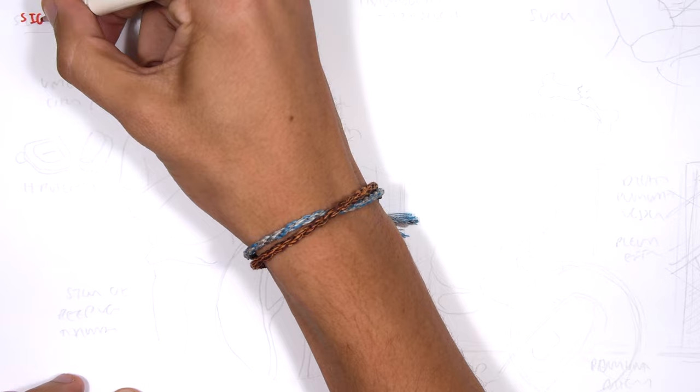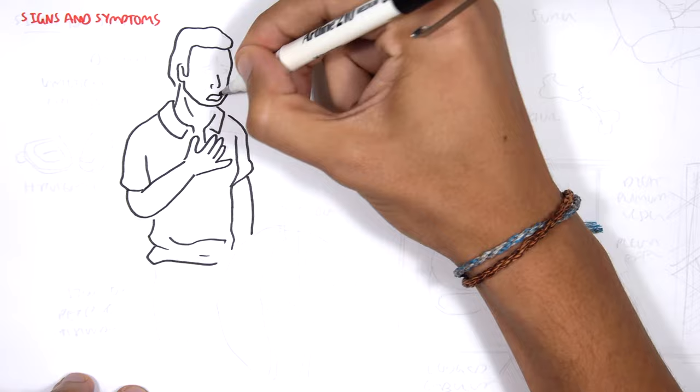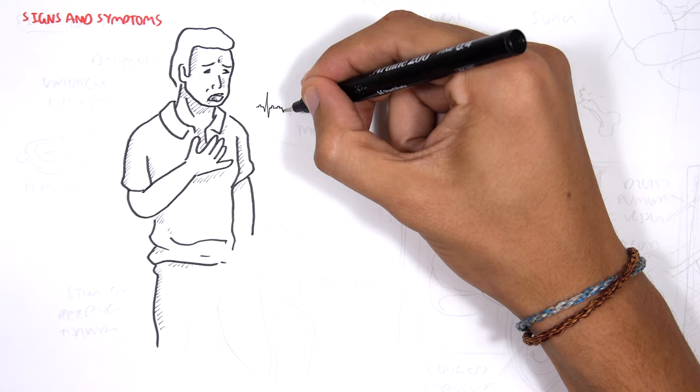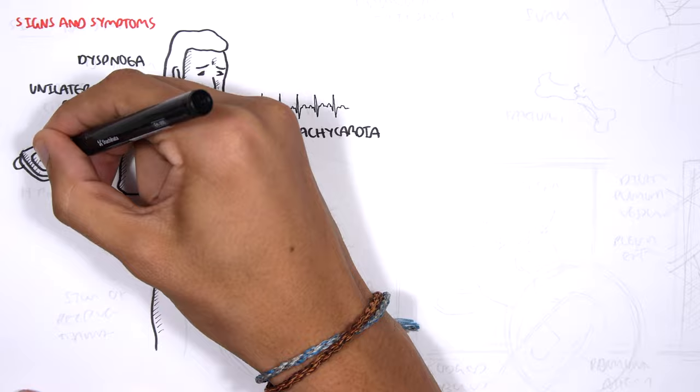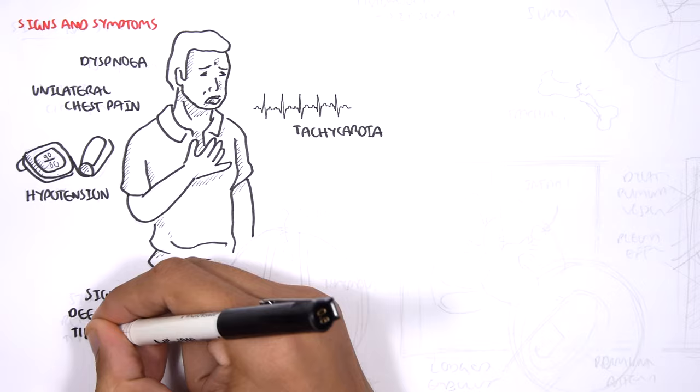Let's look at some signs and symptoms of someone who has pulmonary embolism. The person will experience tachycardia, a gradual increase in heart rate. They'll experience dyspnea, difficulty breathing or shortness of breath, unilateral chest pain, hypotension or low blood pressure, and signs of deep vein thrombosis.